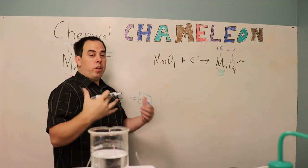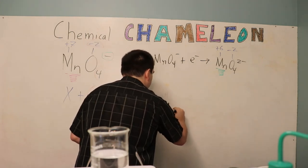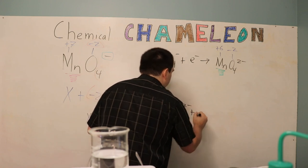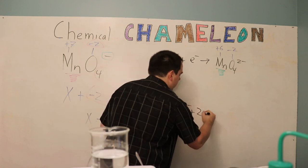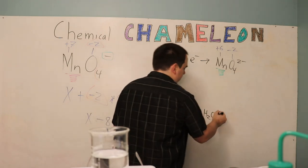Then it will go ahead and further react with the sugar and be reduced more. So we'll go from MnO4 2 minus. Now this is going to be a little bit slower reaction because I added in some hydroxide. I made a basic solution.